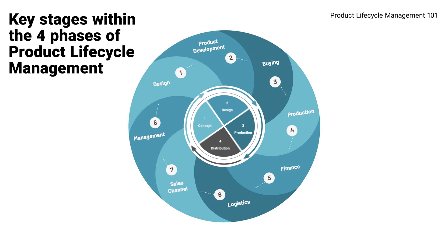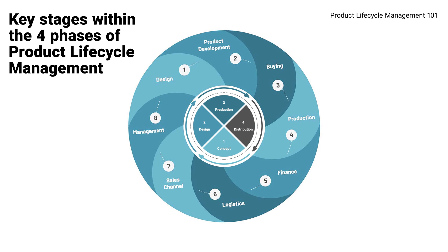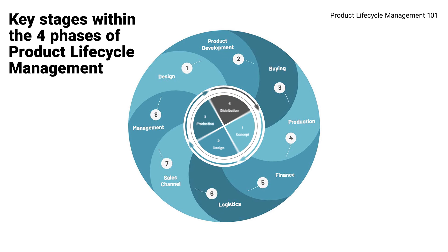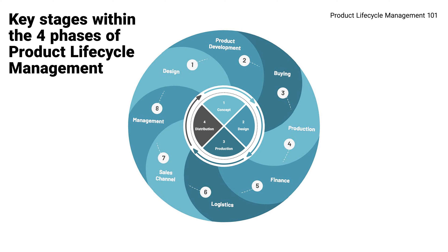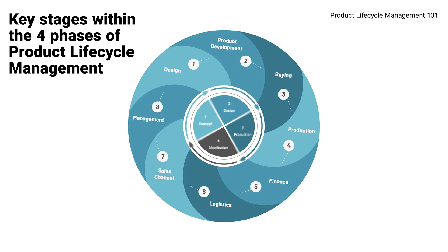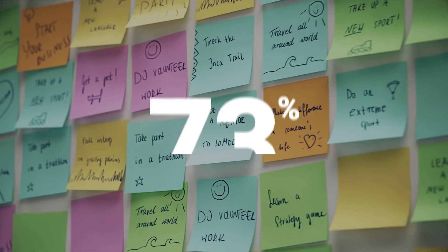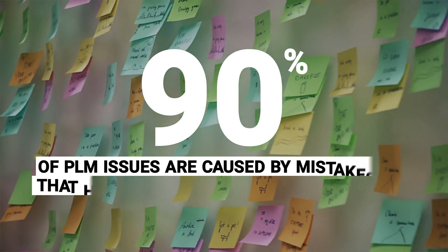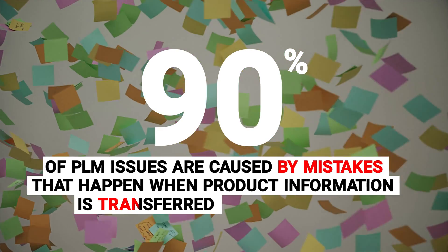In each phase, product attributes are passed between numerous teams encompassing both internal departments and external suppliers and sellers. Each of these parties works with complex product specifications that must be accurate and consistent. In fact, 90% of PLM issues are caused by mistakes that happen when product information is transferred.